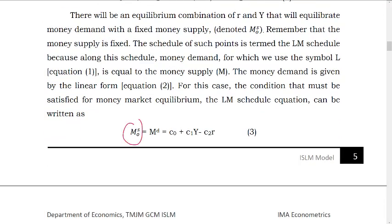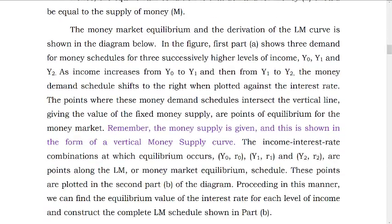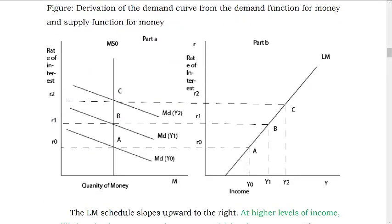Money supply is fixed — that is exogenously given. Remember that the money supply is fixed. This is the money supply at a given level of income. We will see the money demand in detail later — how we can derive the LM curve.